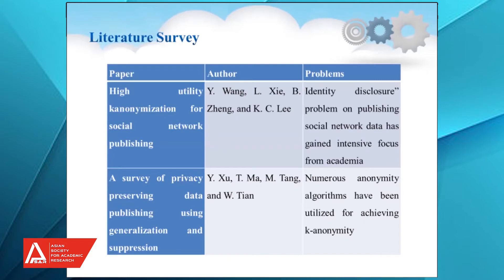Coming to the literature survey. The first paper is 'High Utility K-Anonymization for Social Network Publishing' by Y. Wang, LZ Basing and others. The problem identified is that whatever data is sent through the network, the cloud service provider may outsource that data, so there is no transparency.